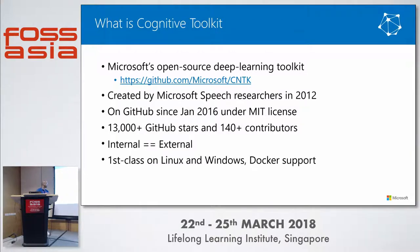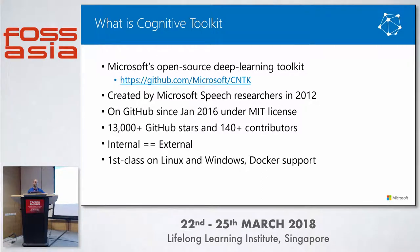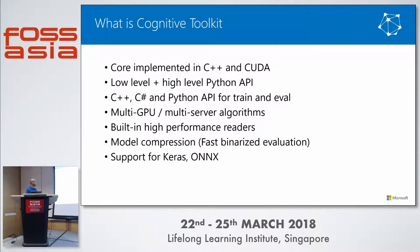CNTK is an open source deep learning library available on GitHub. It was made public in January 2016 under an MIT license, so quite flexible. Importantly, what we use internally and what's available on GitHub are identical — we actually use the GitHub branch for production purposes. It's available to everyone, with support for Linux, Windows, and Docker.